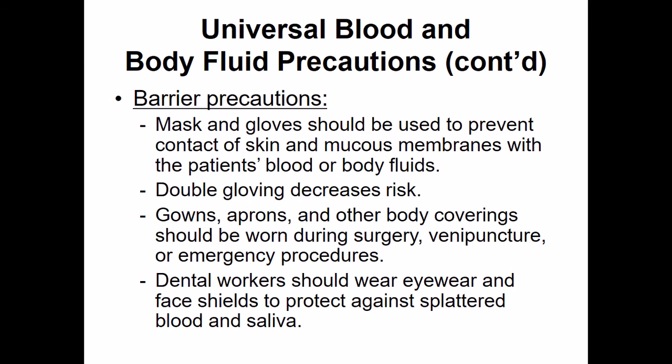So we're going to have a lot of barrier precautions. These are going to be things like masks, gloves, and goggles. We also are going to have double gloving occurring. Double gloving is a way to help further decrease the risk. So in a high-risk situation, throw on those double gloves — they're cheap and so much less expensive than having an accidental exposure.